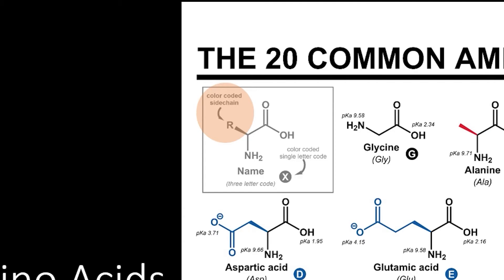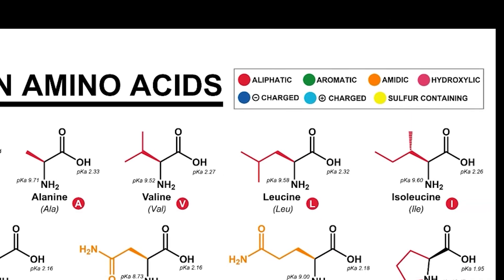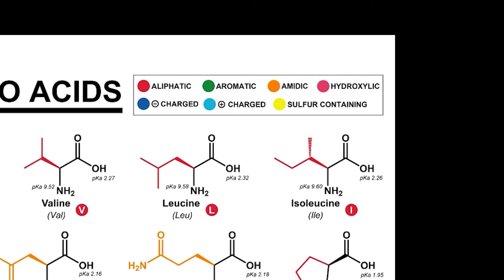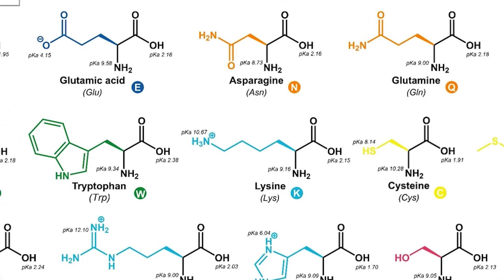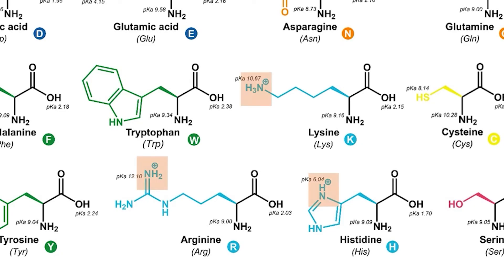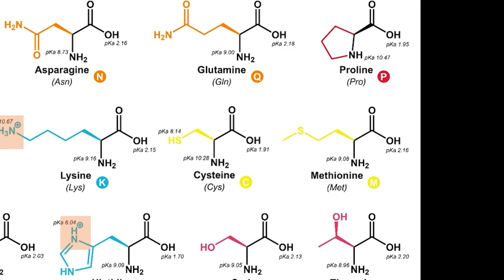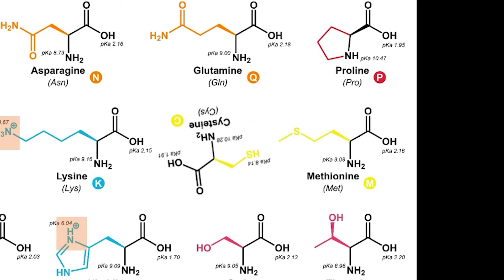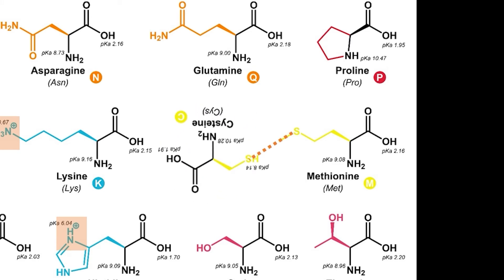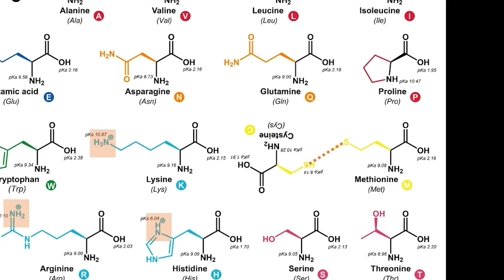Each R group has a different chemical composition, allowing each amino acid to serve a different chemical and physical role within a protein. Though there are 20-plus amino acids used in nature, we can classify them into seven different functional groups based on their chemical and physical properties. For instance, several amino acids have positively charged R groups, creating hydrophilic portions of the peptide that can easily interact with water and are attracted to negatively charged amino acids. Other amino acids contain sulfur, which can form sulfur crosslinks with other sulfur-containing peptides, helping hold multiple polypeptides together in a larger quaternary structure.